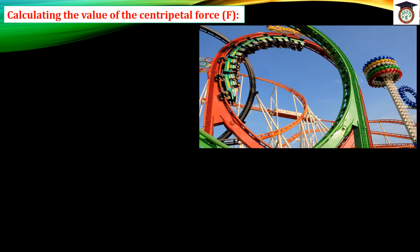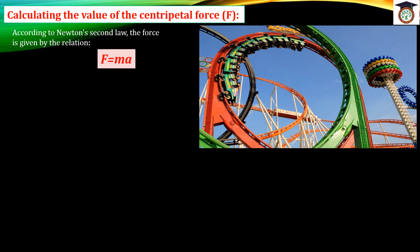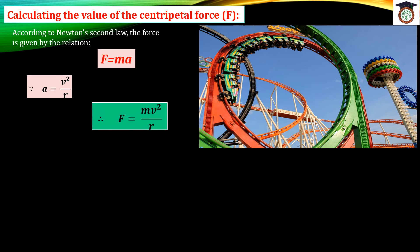Finally, how do we calculate centripetal force? The centripetal force is the force that keeps an object moving in a circular path. According to Newton's second law, F = mass × acceleration. Since the object moves in a circular path and a = V² / R, we substitute to get the centripetal force formula: F = mV² / R.